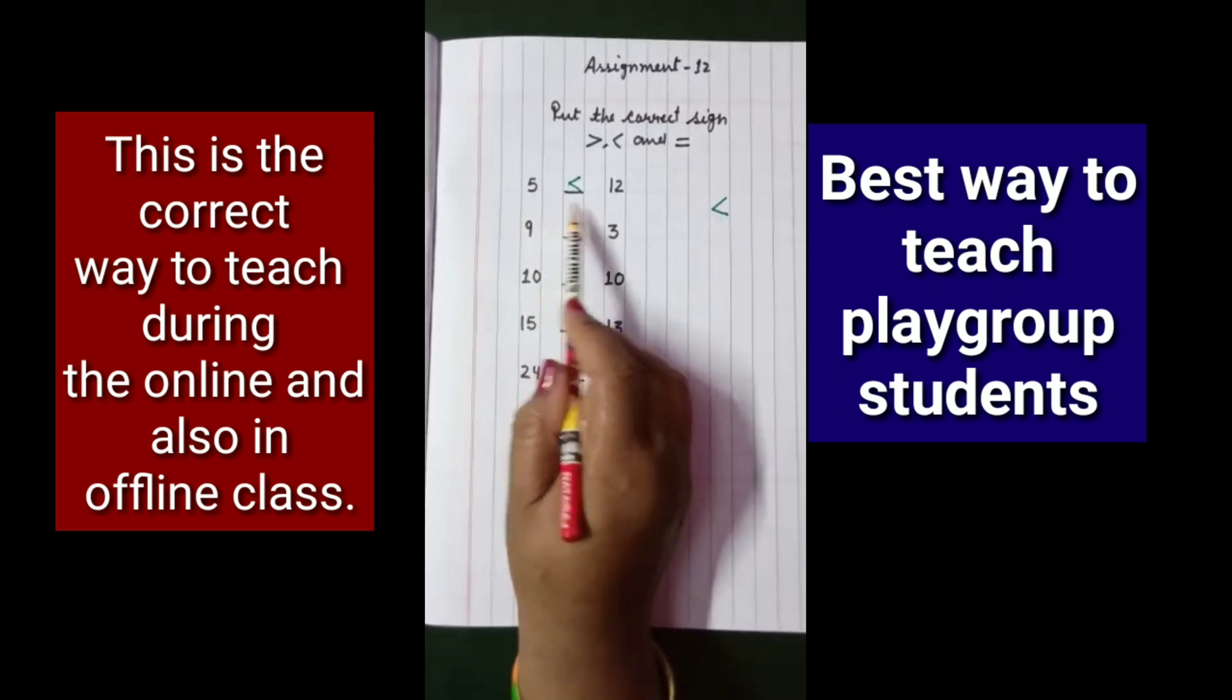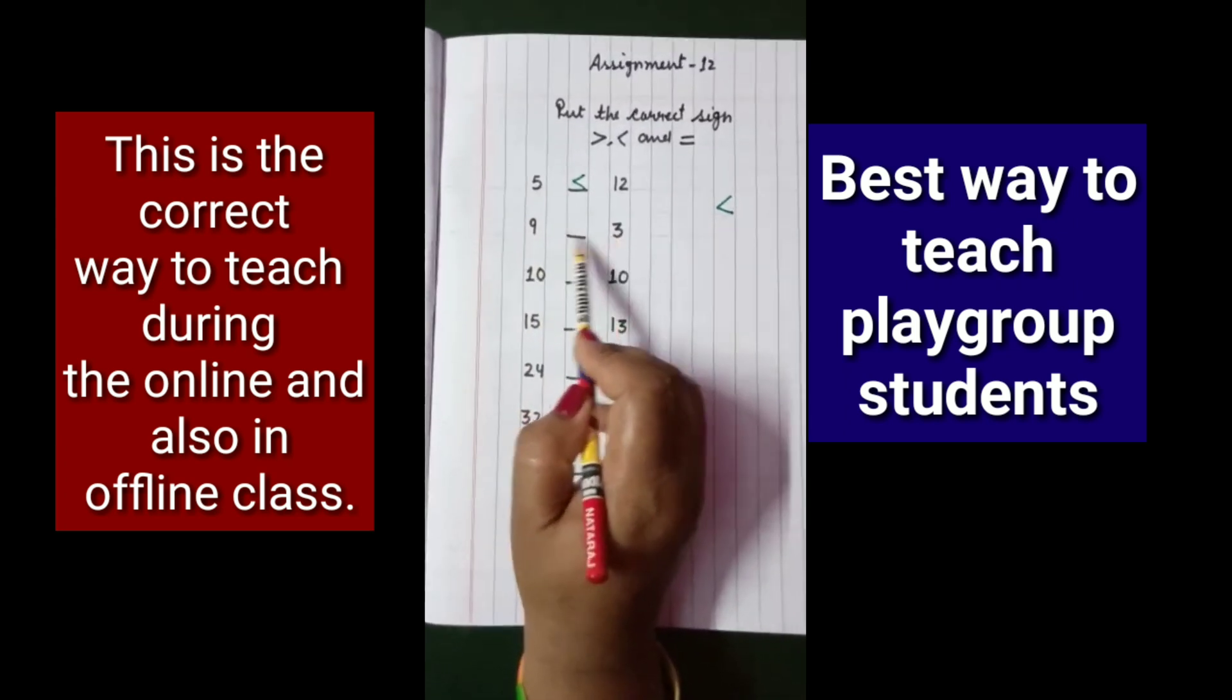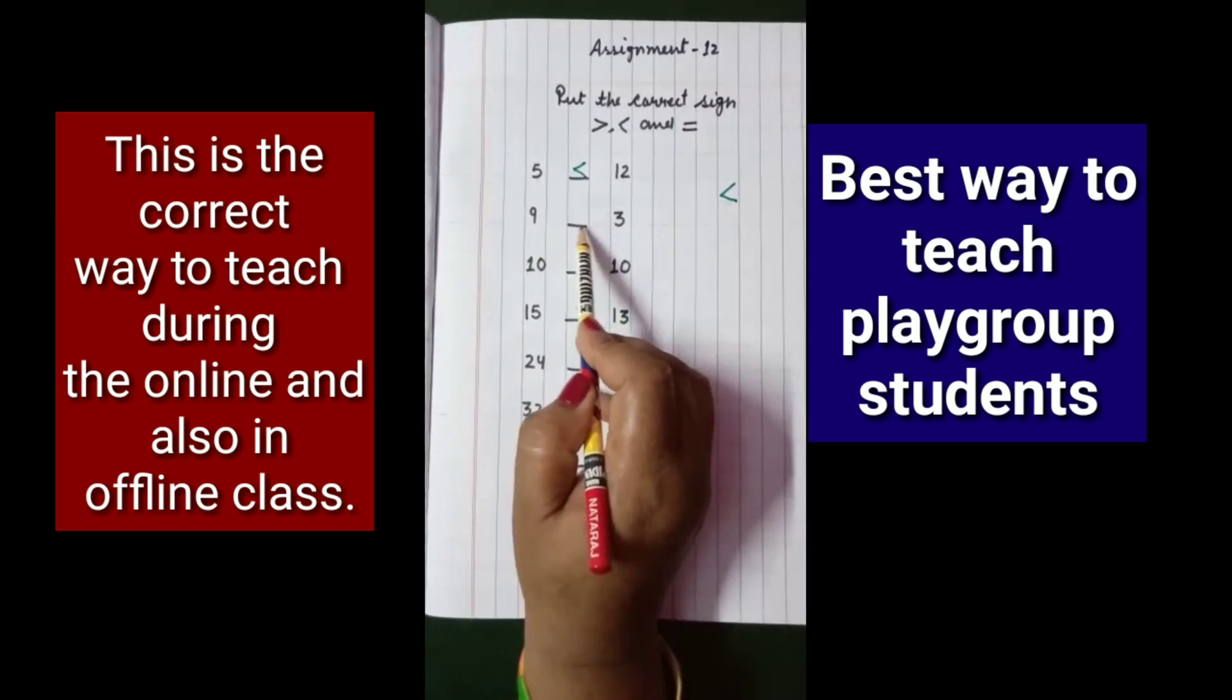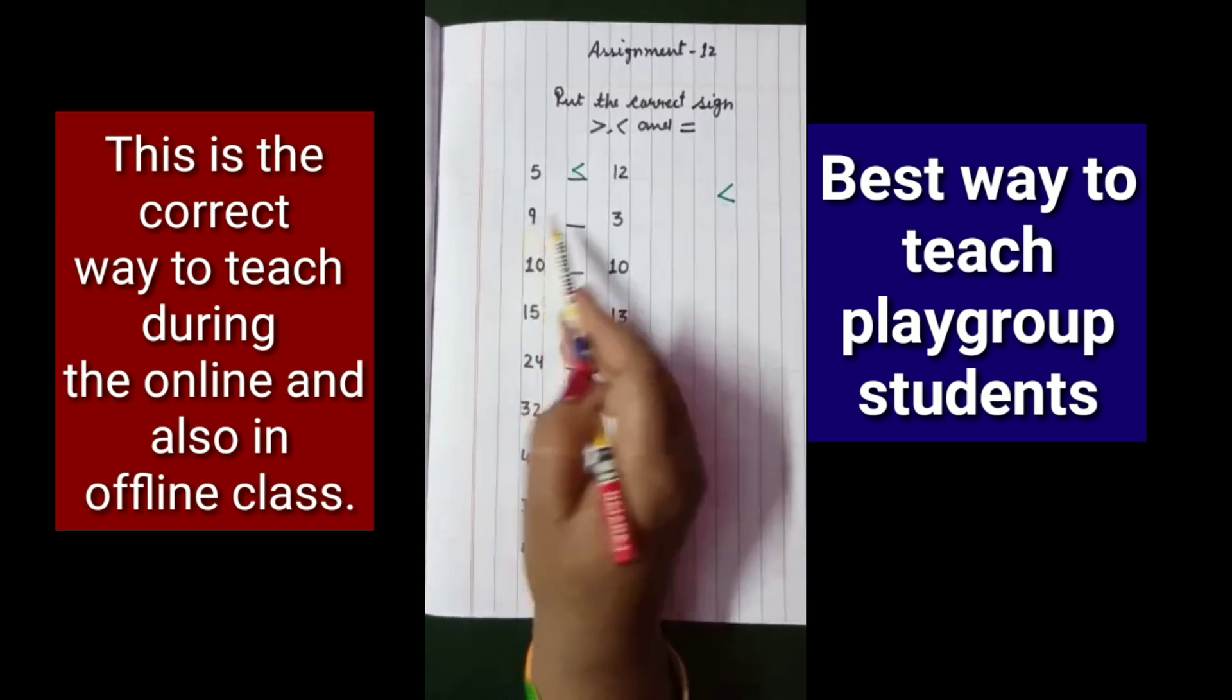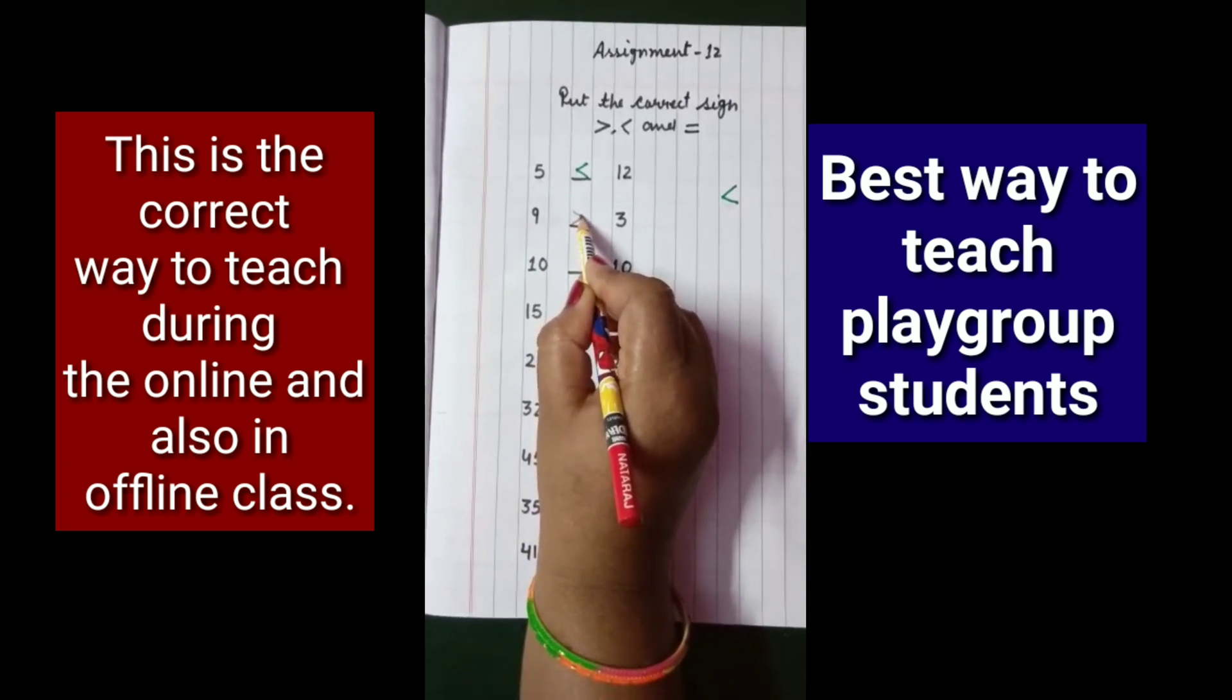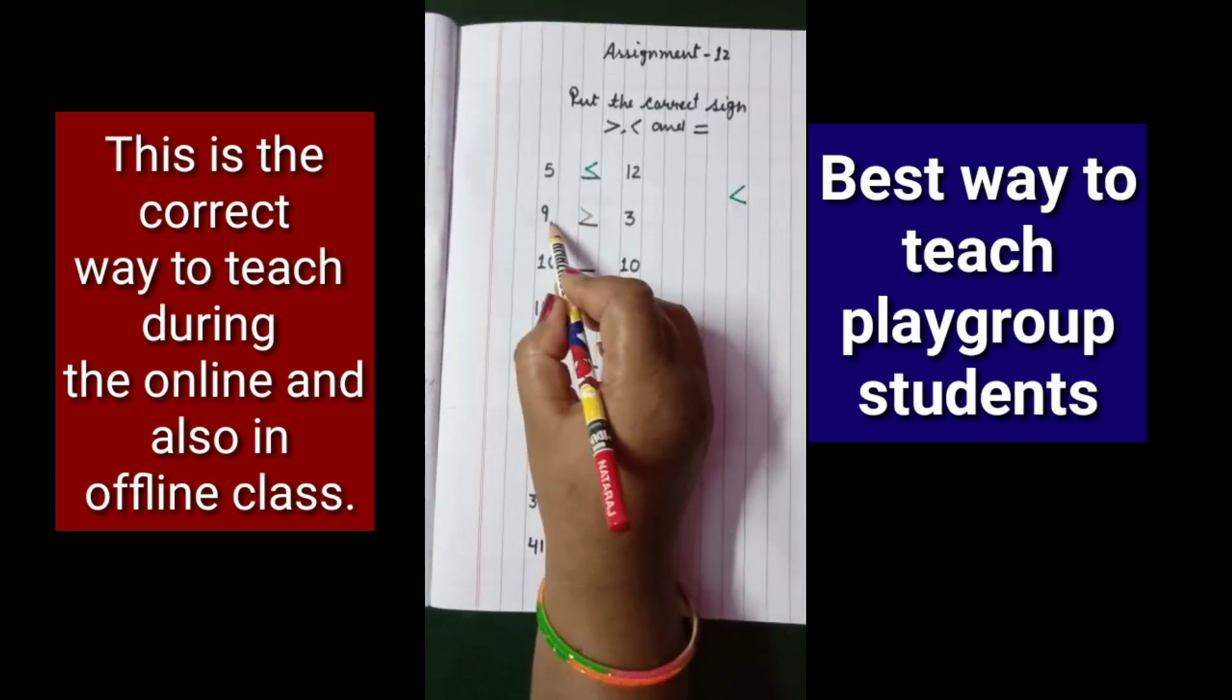So now look, it is 9 and 3. So which is the smallest number? 3, right. And the bigger one is 9. So we will open the mouth towards 9 as the open mouth faces the greater number.